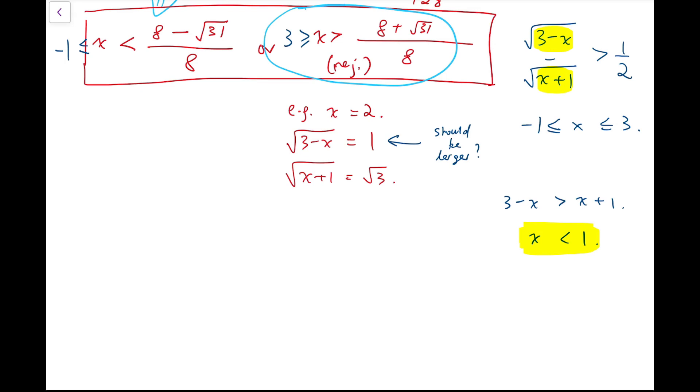So what remains is this set of inequality. So our final solution should be x to be between minus 1 and 8 minus root 31 over 8, and include minus 1 as well. So this is our final answer.